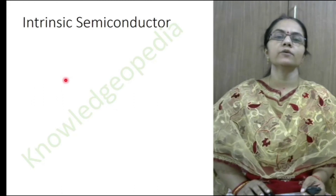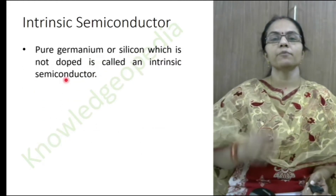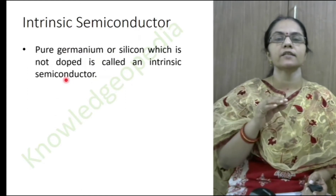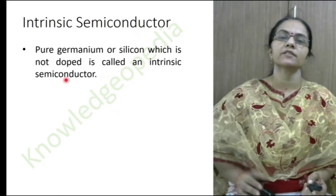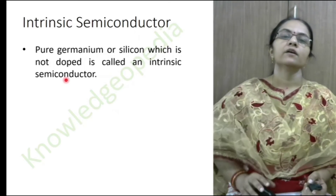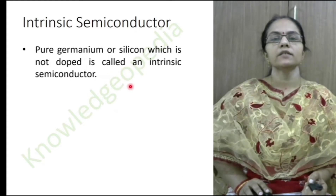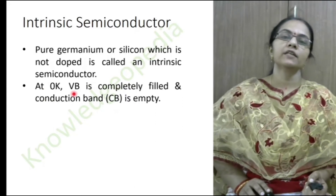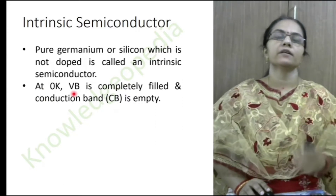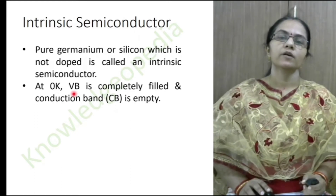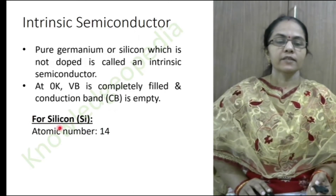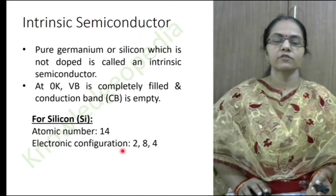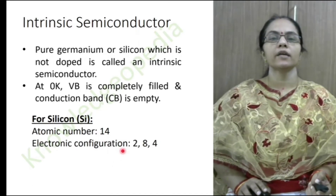Intrinsic semiconductors are the pure form of crystals like silicon and germanium, not doped with any other elements. These intrinsic semiconductors have a completely filled valence band and completely empty conduction band at 0 Kelvin. For example, silicon has atomic number 14 and electronic configuration 2, 8, 4.